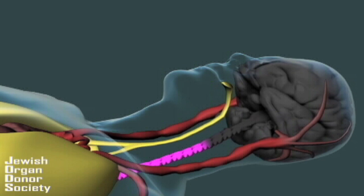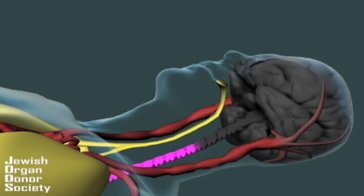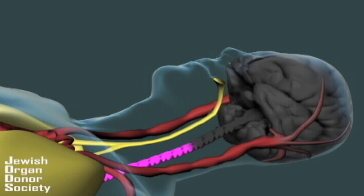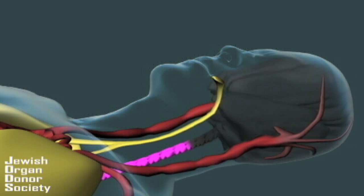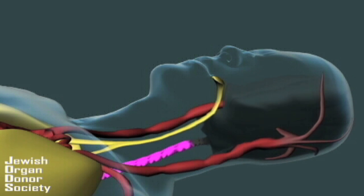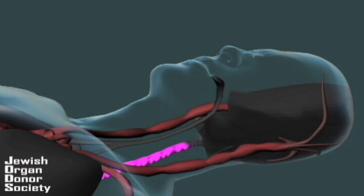In fact, the cells don't just die. A process called lysis begins where cells start to liquefy. This liquefaction makes brain death irreversible. Once the brainstem dies, the person stops breathing and the heart and the rest of the organs die due to oxygen deprivation.